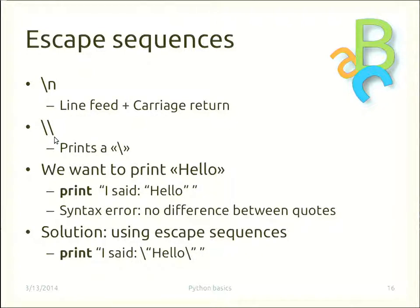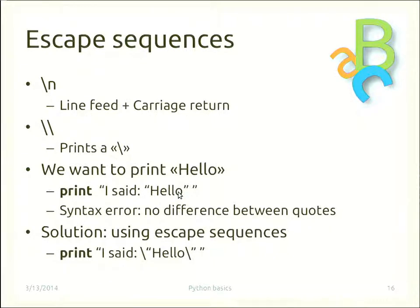A double backslash prints a single backslash. If you want to print 'hello' with double quotes around it inside a print statement, writing it naively causes a syntax error. Python interprets the first double quote as ending the string, so 'hello' becomes hidden and causes an error. The solution is to use escape sequences — escaping the inner quotes with a backslash.